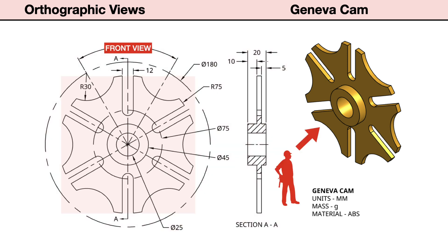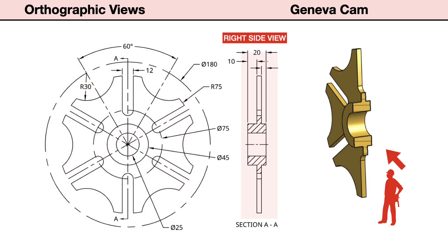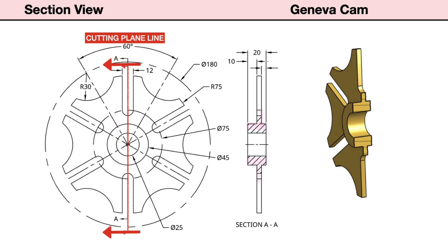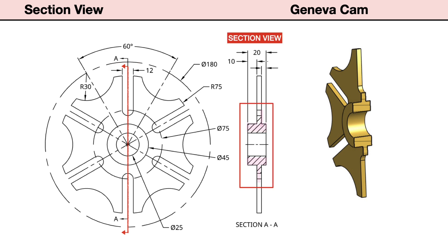To the left is the front view, and to the right is the right side view. This view is shown as a full section view. The cutting plane line, shown in the front view, shows the location of the cut and the arrows indicate the view direction of the section. The hatched section lines in the section view show where the solid material was cut to show an interior view of the part.